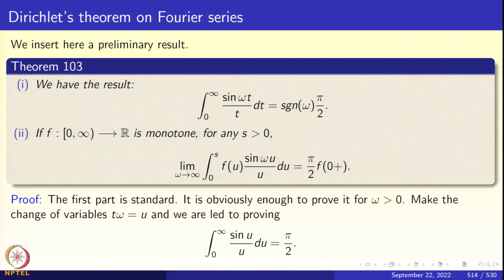We will go further with Dirichlet's theorem on Fourier series. We need a preliminary lemma — Theorem 103. We have the following limit: ∫₀^∞ (sin ωt / t) dt = sgn(ω) · π/2, where sgn(ω) = 1 if ω > 0, −1 if ω < 0, and 0 if ω = 0. The second result is: for a monotone function f and fixed s > 0, lim_{ω→∞} ∫₀ˢ f(u) (sin ωu / u) du = (π/2) f(0+). It doesn't matter whether f is monotone increasing or decreasing, since multiplying by −1 handles the other case.